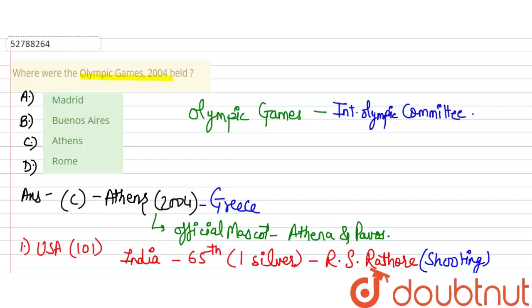The IOC was formed in 1894. They made the decision that Olympic Games would start in 1896. The first modern Olympic Games was held in 1896.